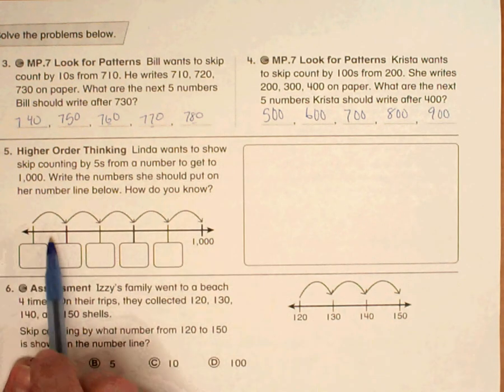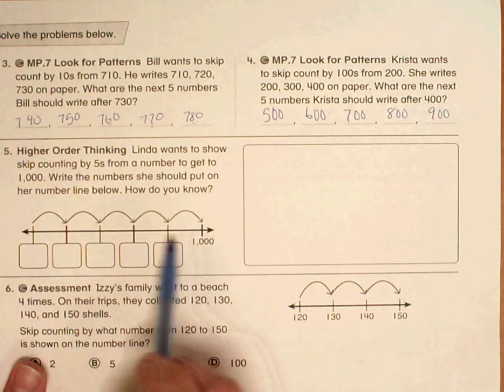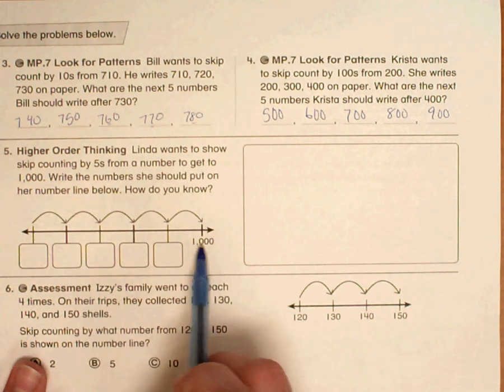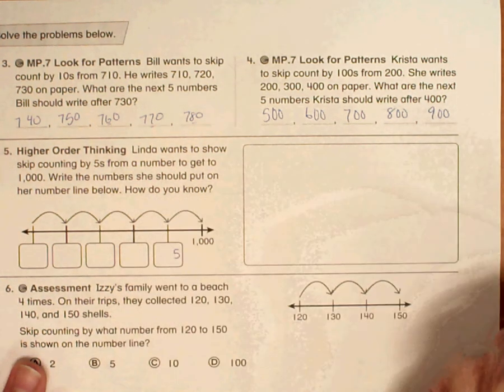Well, if we're going to skip count by 5's going forward, we're going to subtract 5 going backwards. So 1,000 minus 5. We know that the 1's place is going to be a 5.